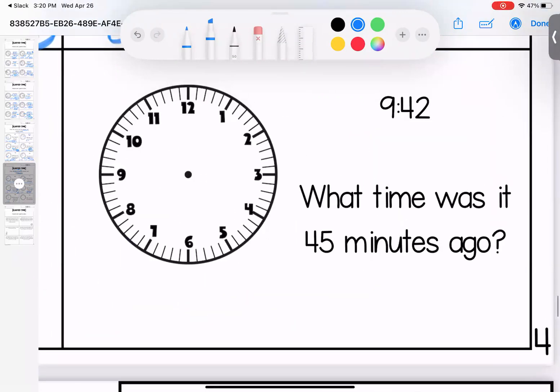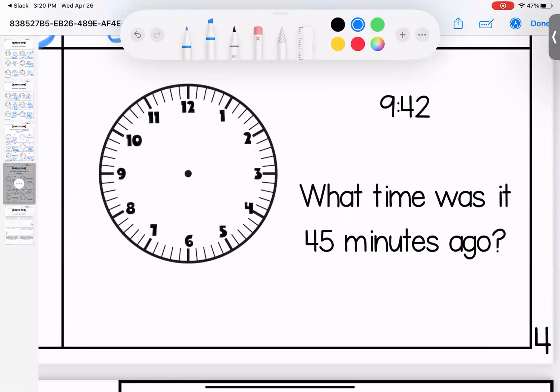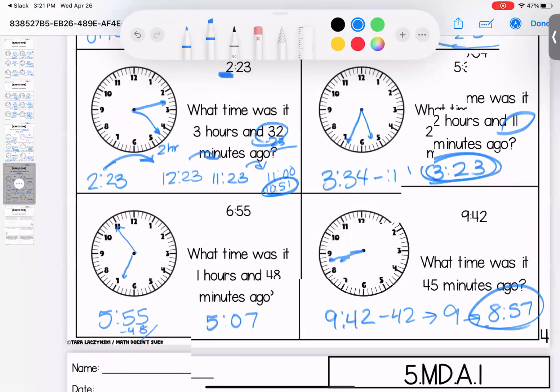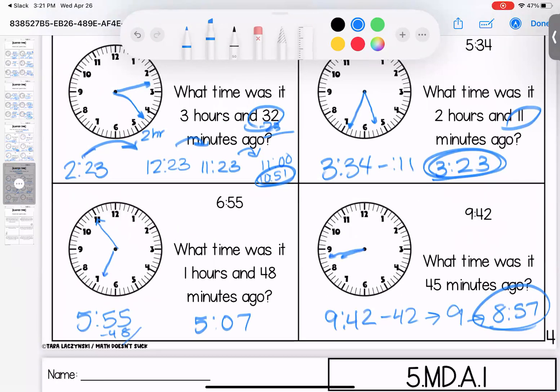Over here, 9:42. What time was 45 minutes ago? So 9:42 minus 42 minutes takes us to 9, but we need three more minutes. So if we take three minutes off of nine, we get 8:57. Questions on these, bring them with you to class.